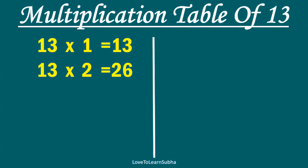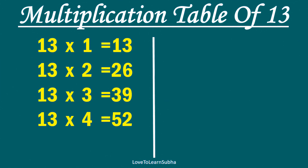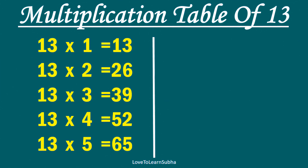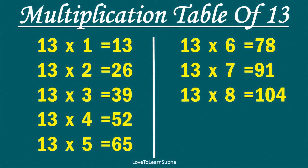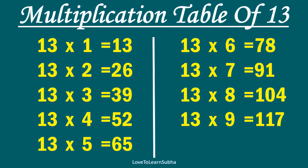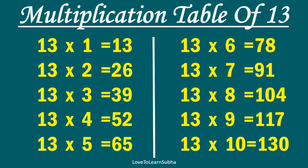Multiplication table of 13. 13×1 is 13, 13×2 is 26, 13×3 is 39, 13×4 is 52, 13×5 is 65, 13×6 is 78, 13×7 is 91, 13×8 is 104, 13×9 is 117, 13×10 is 130.